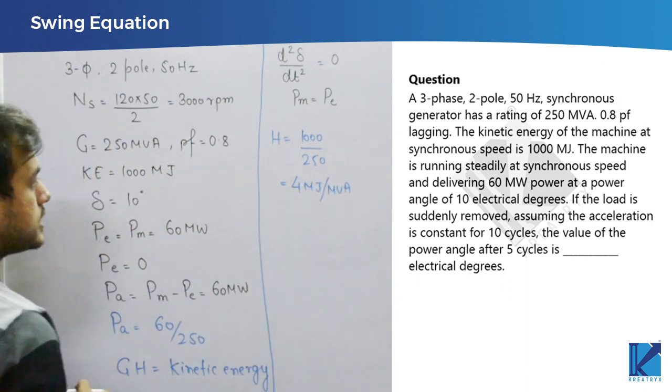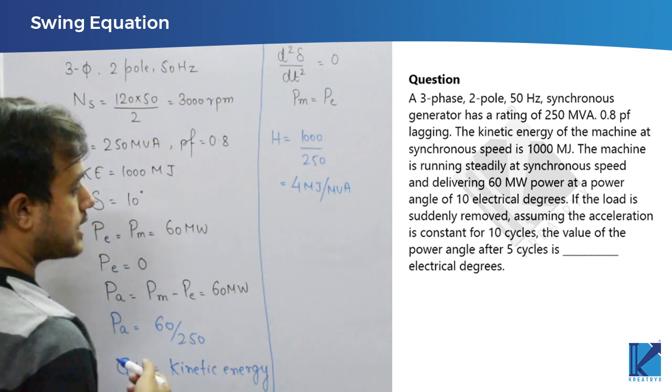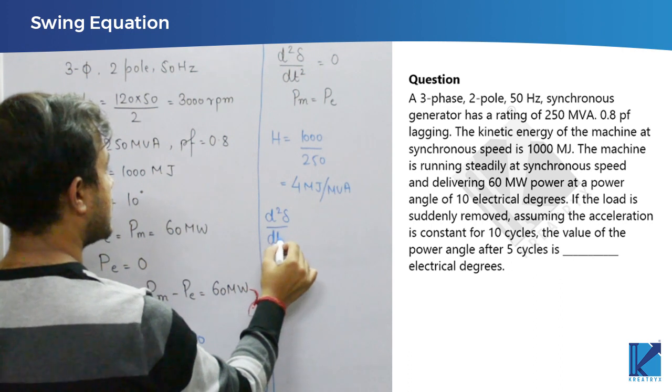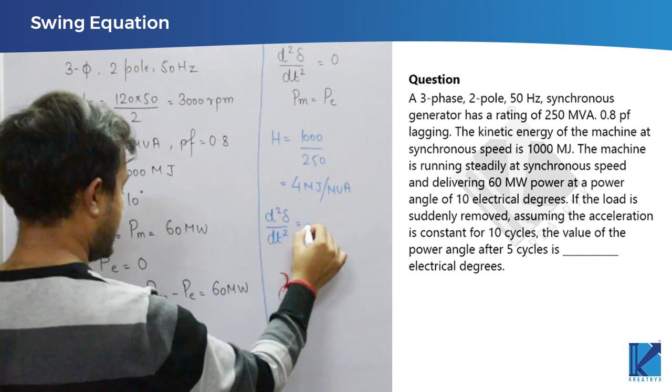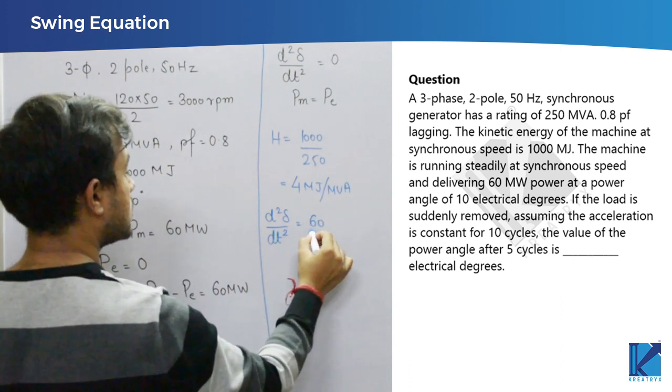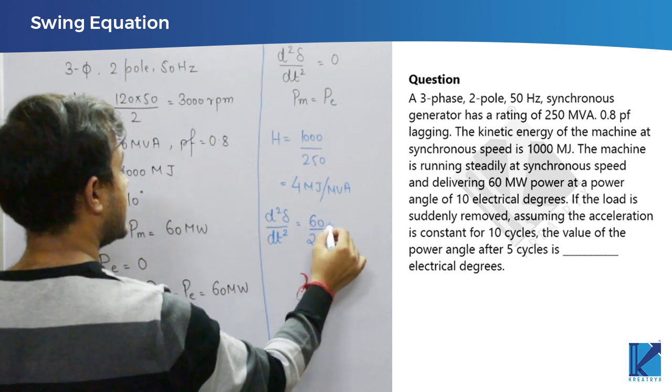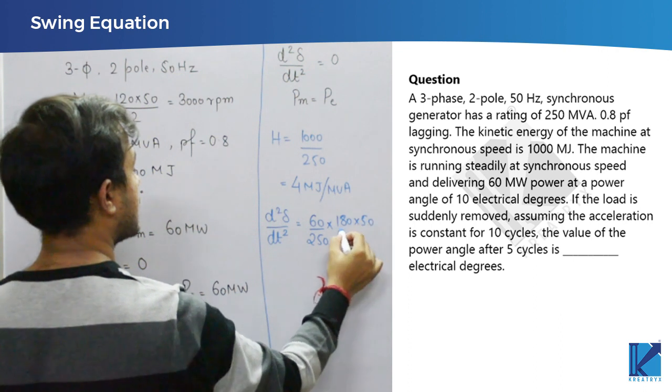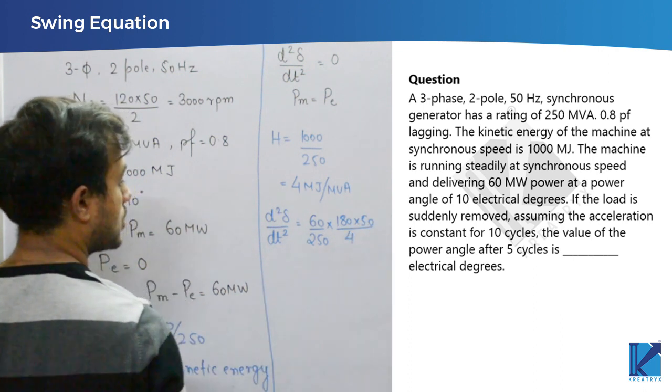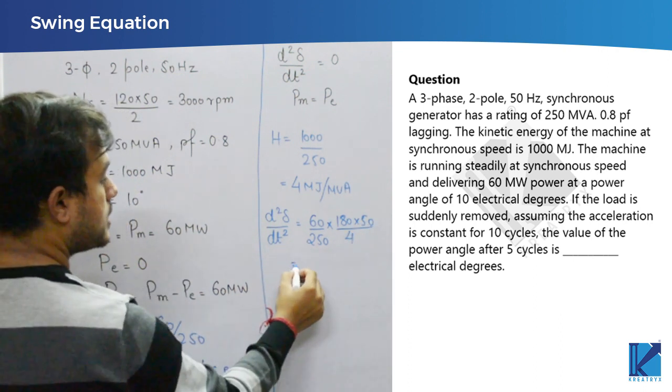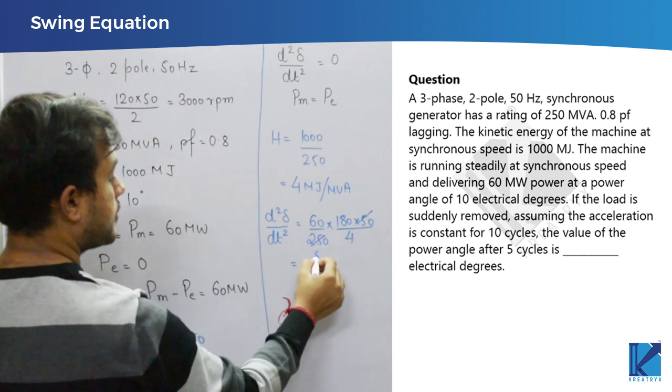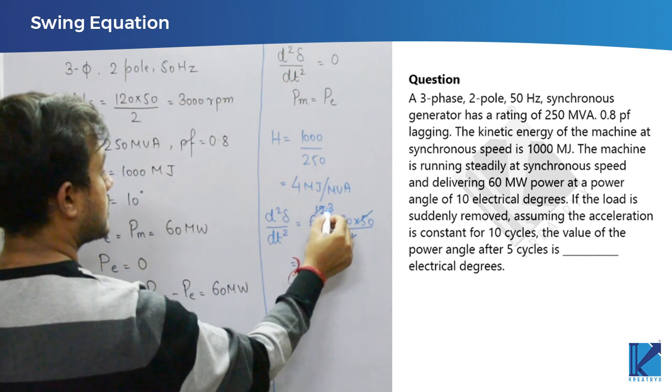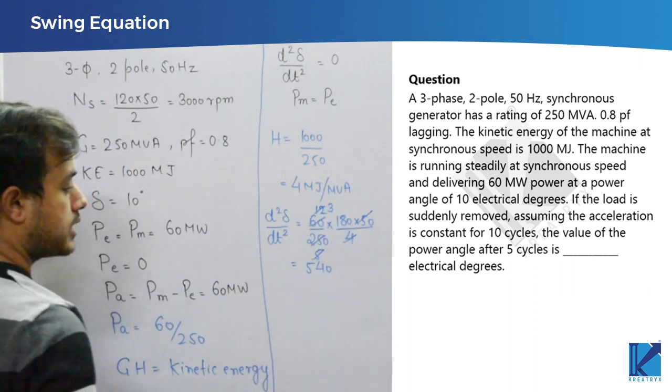Now, I have got H. Now, what else I need is acceleration d square delta by dt square by swing equation will be accelerating power in degree I need. So, 180 into f by H. So, how much will this come out to be? 540.